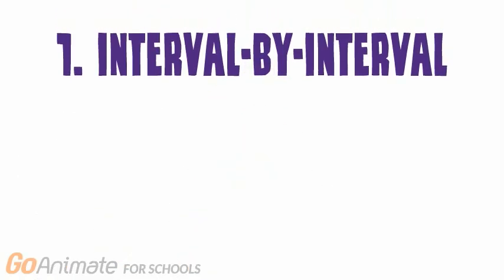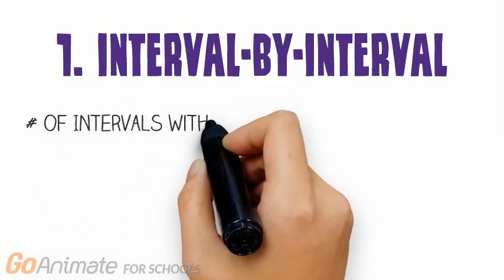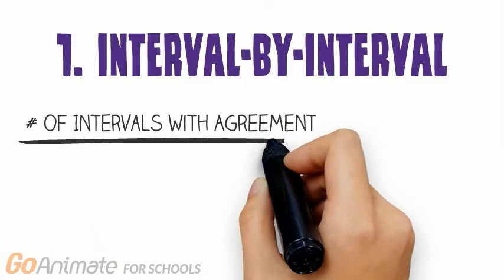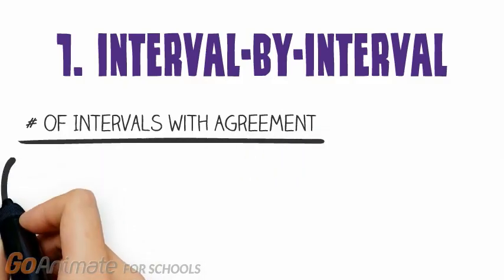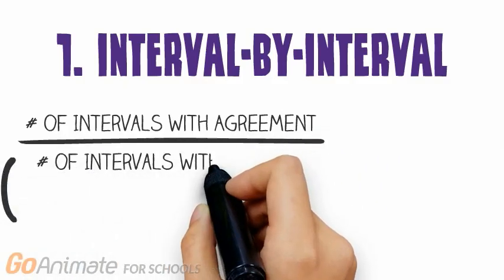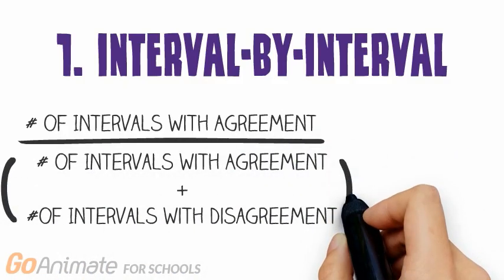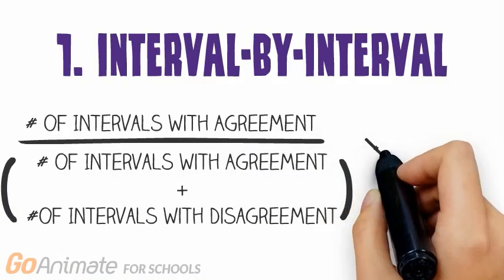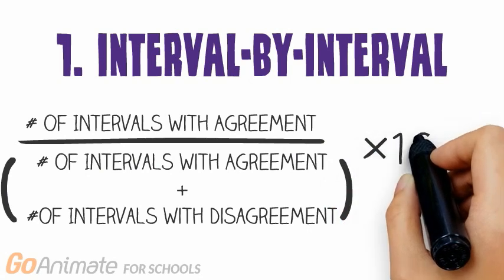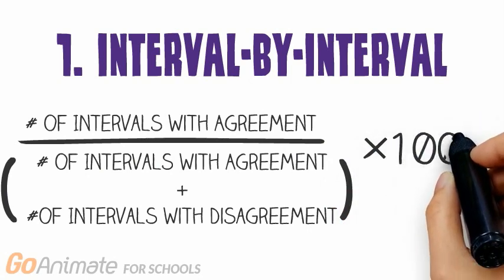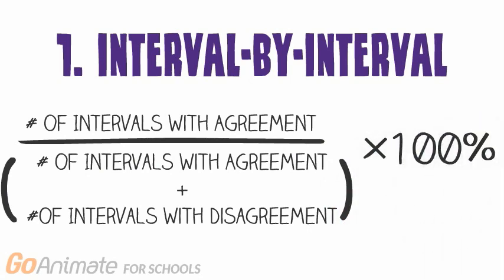The interval-by-interval method provides the proportion of intervals in which both observers agreed on whether the target response occurred. This is calculated by dividing the number of intervals in which both observers agreed by the total number of agreed and disagreed upon intervals.